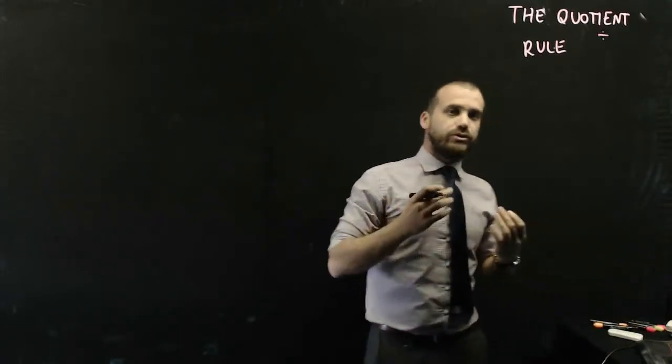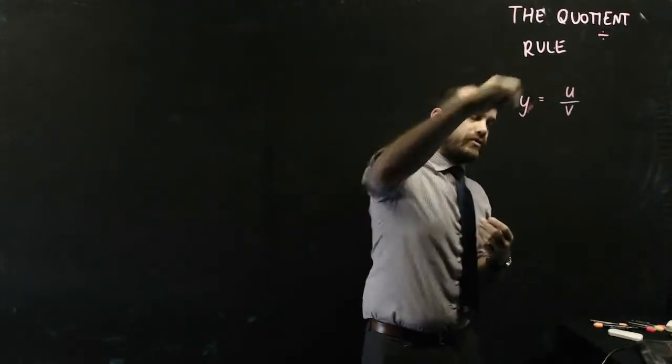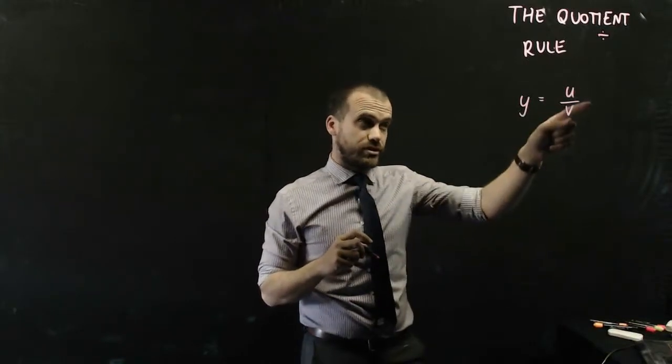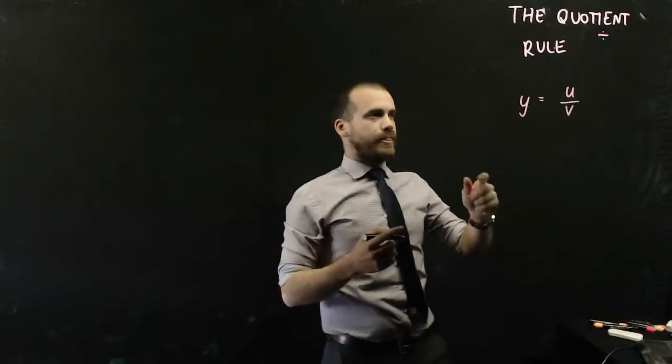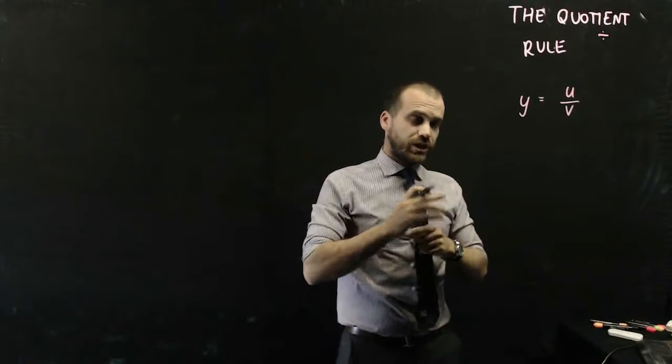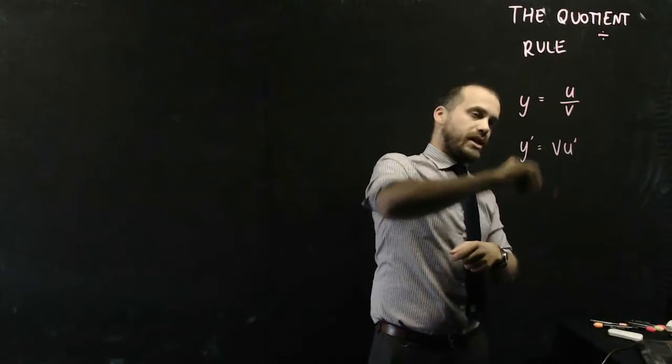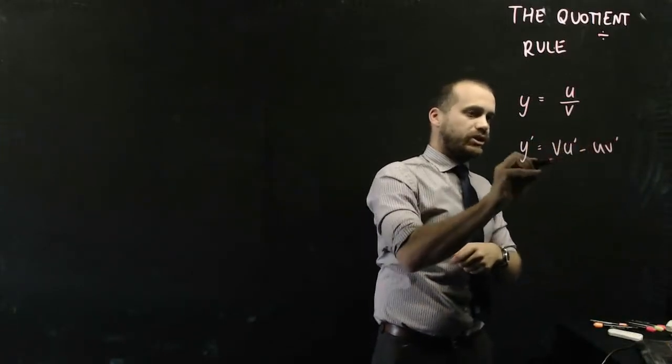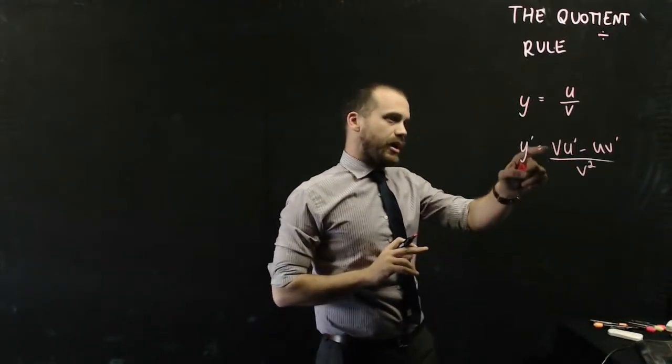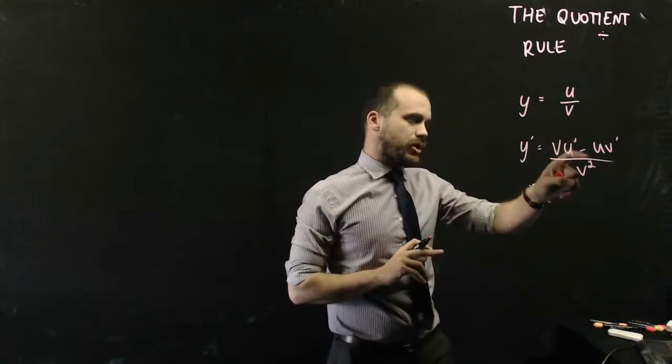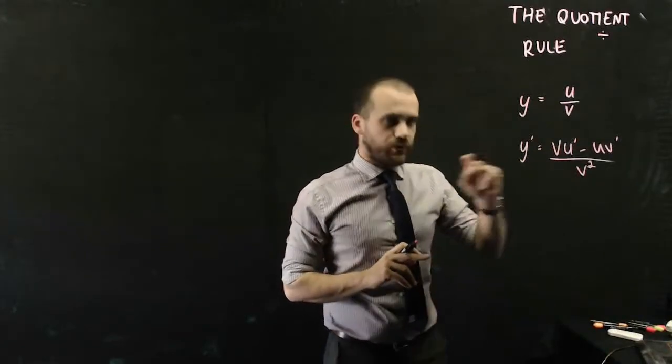So I'm just going to tell you the quotient rule straight away. If y equals u over v, where u and v are both functions, then the derivative of that function is y dash equals v u dash minus u v dash over v squared. Now you really need to make sure you do that in the right order. So that says the bottom function times the derivative of the top function minus the top function multiplied by the derivative of the bottom function all over the bottom function squared.